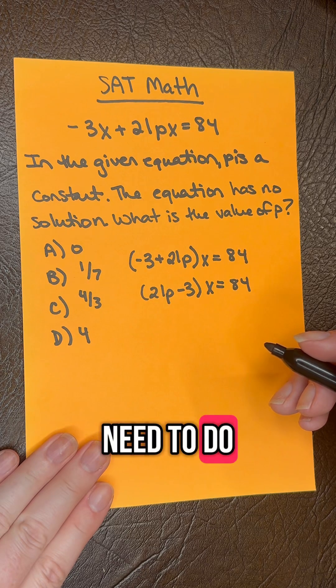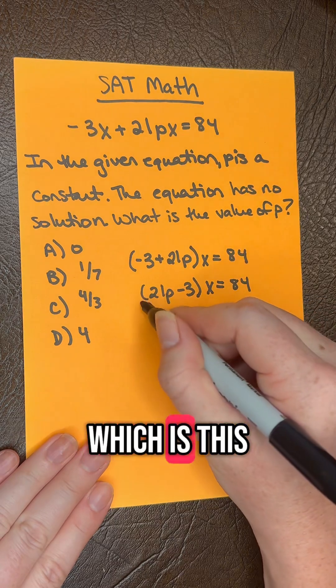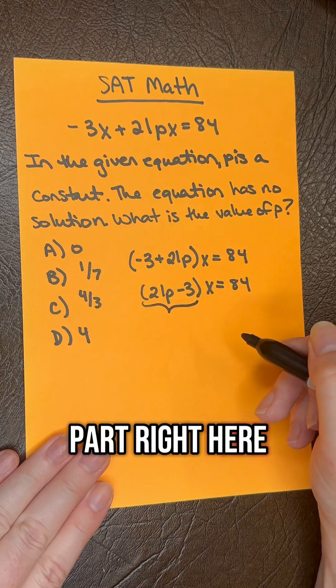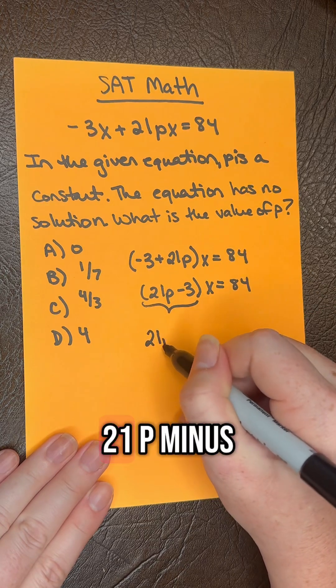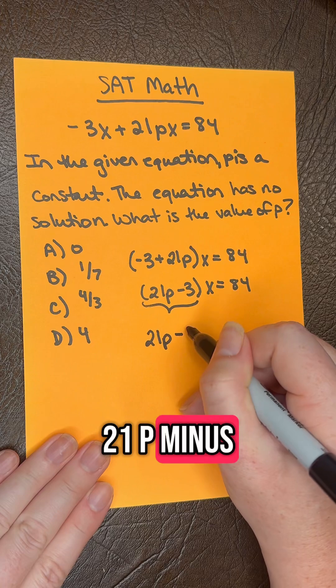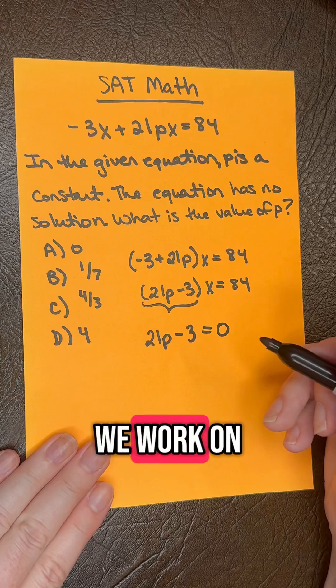So what we need to do is we need to set the coefficient of X, which is this part right here, equal to zero, and then solve. So we have 21P minus three equals zero, and then if we work on solving this,